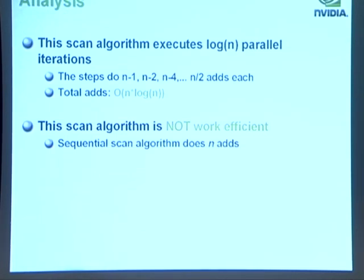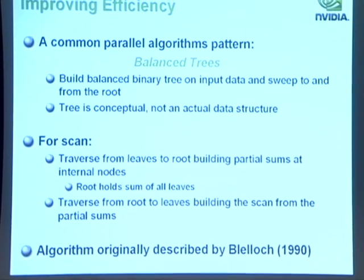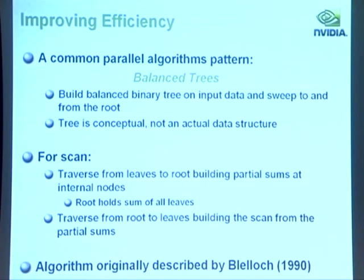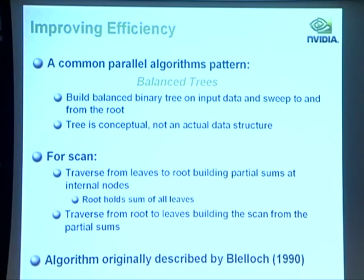We would like a work-efficient algorithm, and there's a common parallel algorithm pattern we can use: balanced trees. Algorithms using balanced trees build a balanced binary tree on their input data and sweep to and from the root. This isn't an actual tree data structure with pointers — it's just a conceptual structure; the data is in an array. For scan, we traverse from leaves to root building partial sums, like a parallel reduction but keeping all intermediate values.